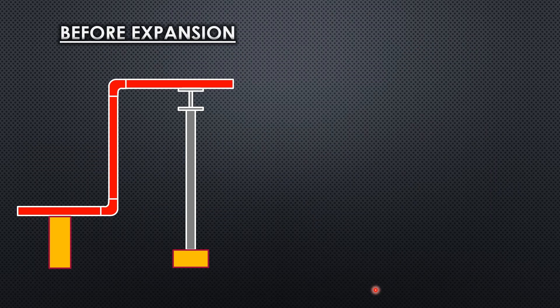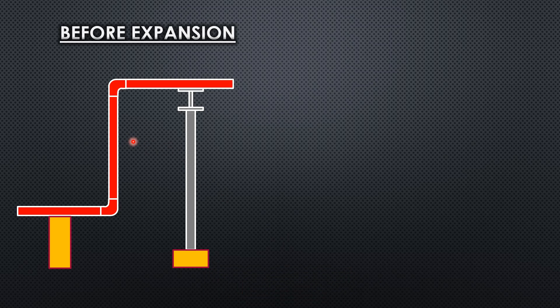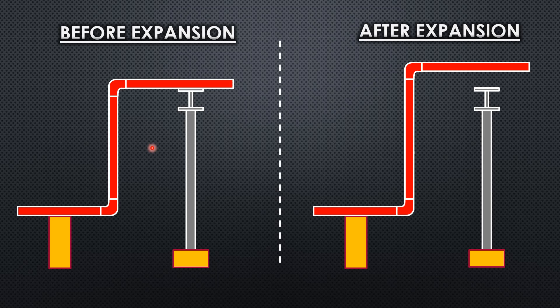Let's look at an example to understand the use of spring supports. Here we have a piping system that is not in operating condition — this is before expansion. When the line goes to an operating condition, the temperature increases and the line starts expanding due to the thermal expansion rate.